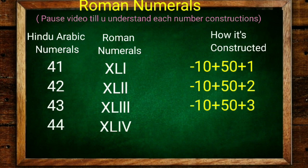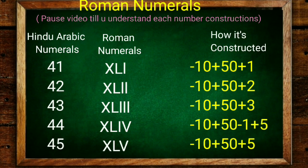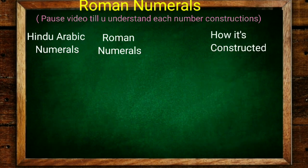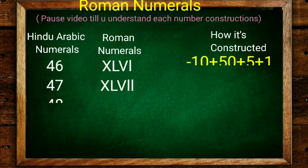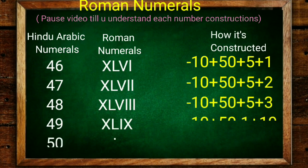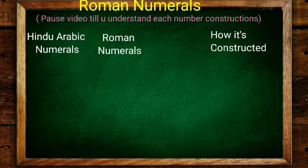41 is 50 minus 10 is 40 plus 1. Now see 44: 50 minus 1 is 5 minus 1, 40 plus 4. 45 is 40 plus 5. 46 is 50 minus 10 is 40 plus 5 plus 1. 47 is 40 plus 7. 49 is important: 50 minus 1 is 40 and 10 minus 1 is 9, so 49. And L is 50.